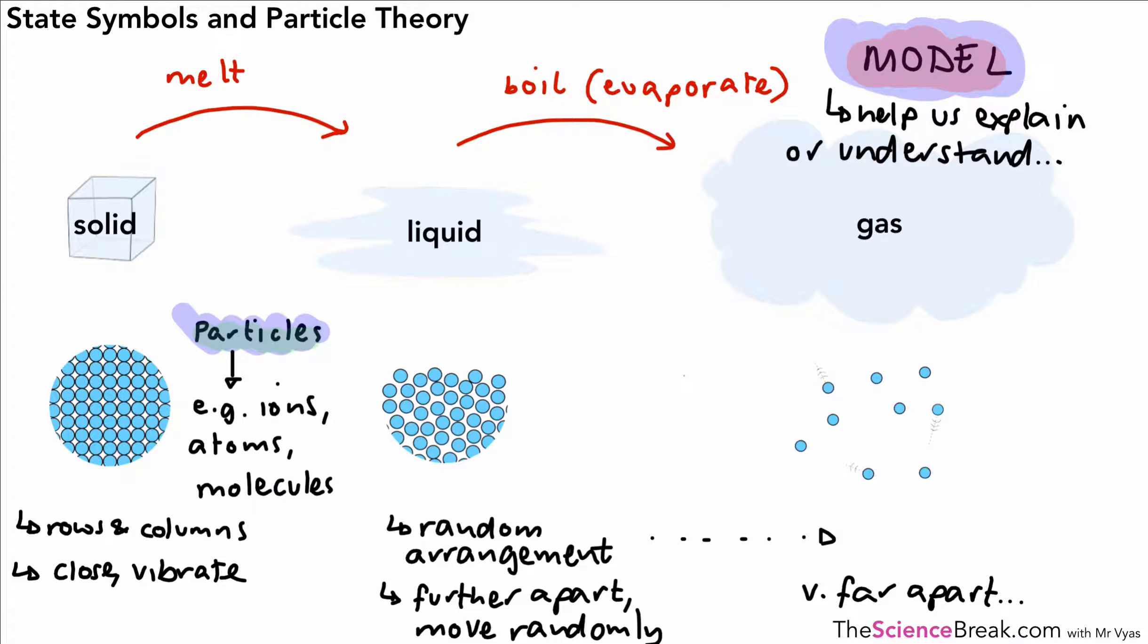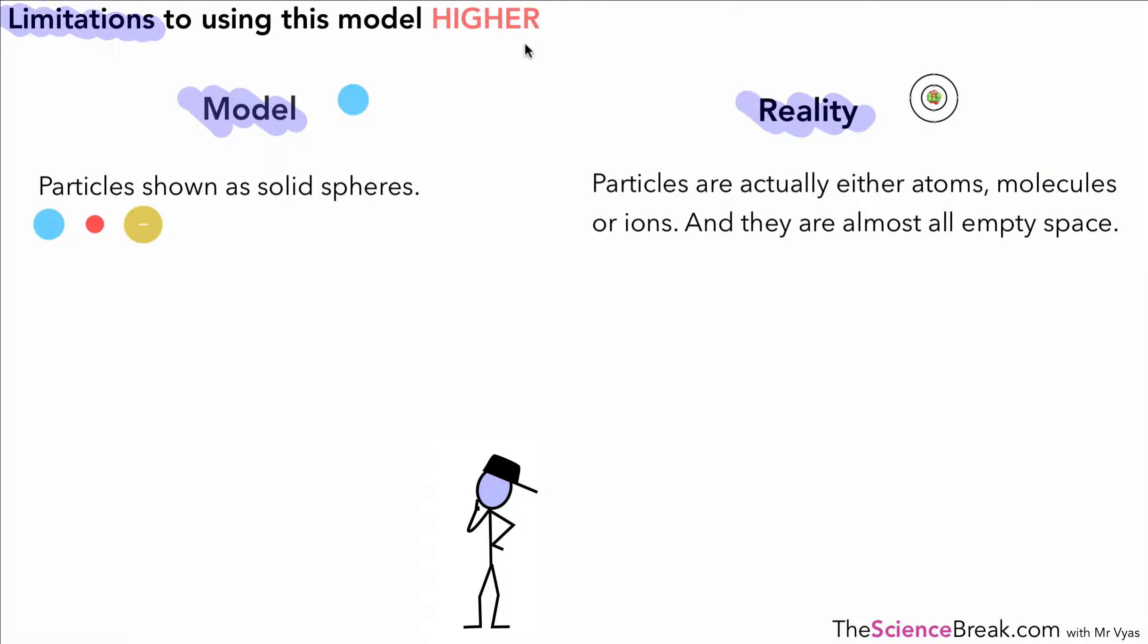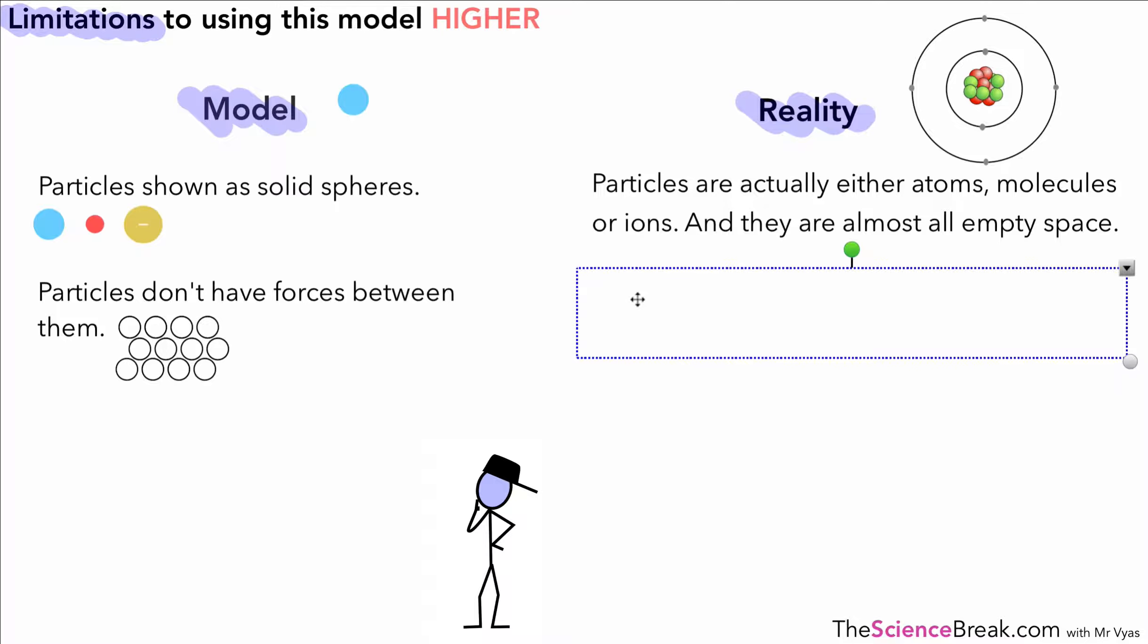There is a slight problem with using this model or using models in science, because they're often not close to what happens in reality. We've got our model on the left and reality on the right hand side. When we do our model, we often show the particles as solid spheres or solid shapes, but in reality the particles are either atoms, molecules, or ions. The particles in our model don't have forces between them, whereas in reality the particles have either forces between them or they are bonded together.